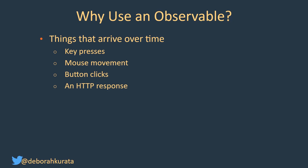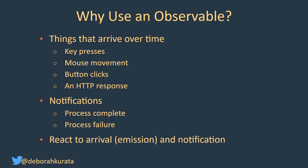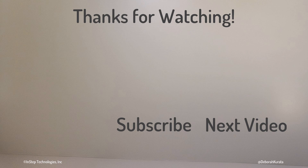So it's a really good use of observables. You can also use it for notifications — process complete, process failure, and so on. Using an observable helps us very easily react to arrivals or emissions and those notifications. The other cool thing about observables, though, is they also work with synchronous data. So you can treat an array as an observable, or any set of data as an observable. So it doesn't necessarily have to arrive over time, but that's really what it's good at. If you like this video, please like and subscribe.